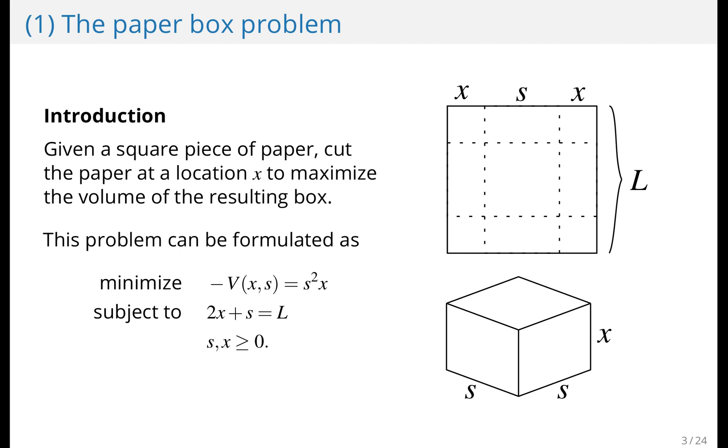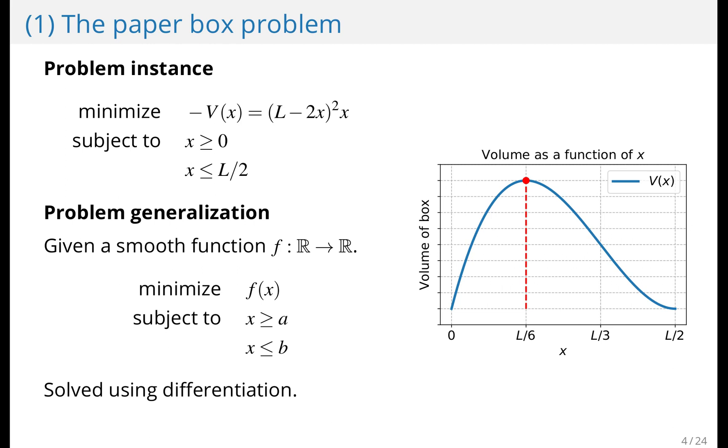You take your constraint and you put it into your objective function. Then you differentiate and it gives you the solution. You equate the derivative to zero and what you find is that the optimal place to cut this piece of paper is one sixth of the length.